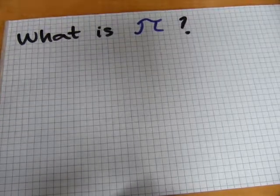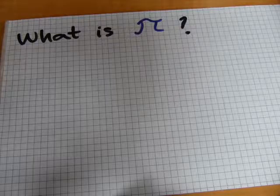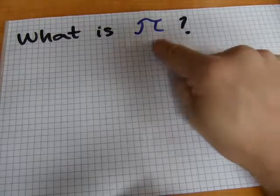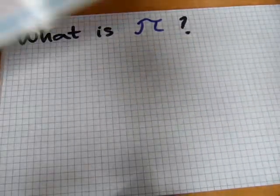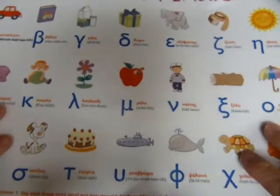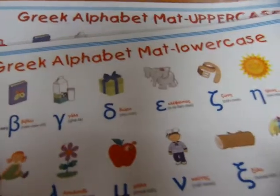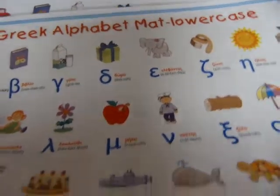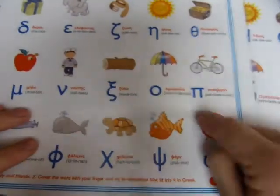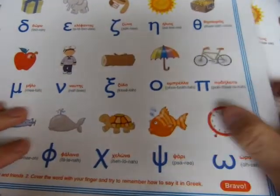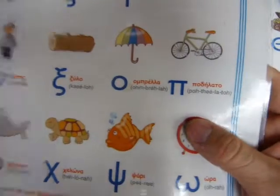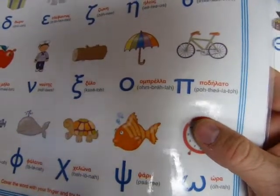First off, pie is what your mama bakes in the oven on a Sunday afternoon. This one is a Greek letter, and you know the Greeks have a full alphabet, 24 upper and lowercase characters. On this kitty mat you can see some of them. So there is the letter Pi, but it's not pronounced as pie, it's pronounced as Pi.